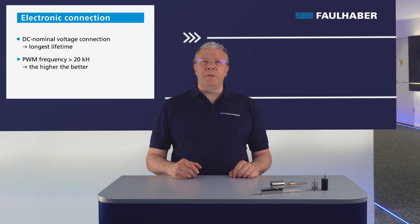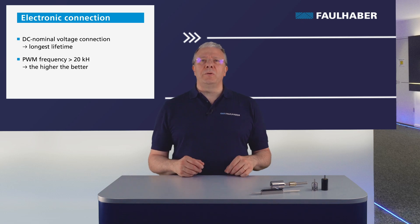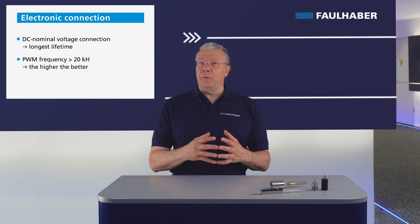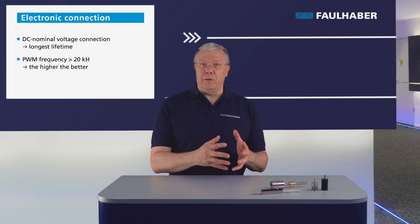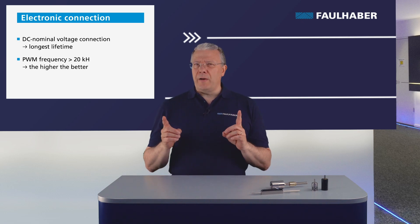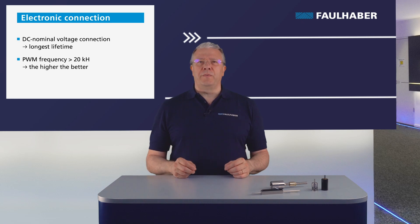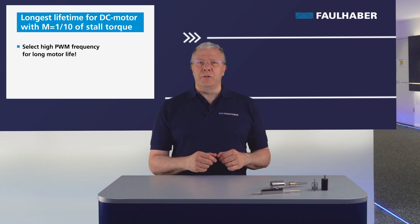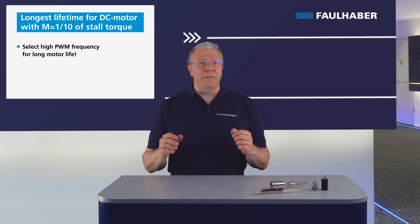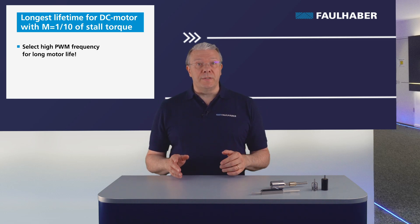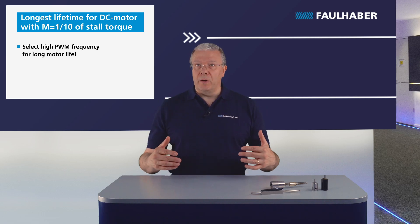The latest Faulhaber speed and motion controllers use PWM at 96 and 100 kHz to drive coreless motors efficiently. The same applies to brushless motor technology — the higher the PWM frequency, the better the motor efficiency and the lower the losses.